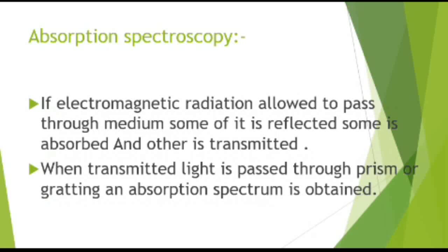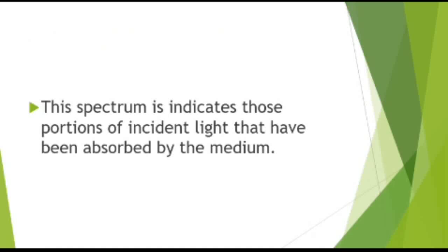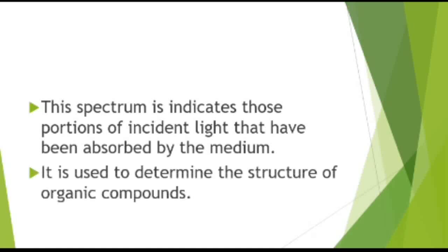In absorption spectroscopy, electromagnetic radiations are allowed to pass through a medium — some is reflected, some is absorbed, and the rest is transmitted. When the transmitted light is passed through a prism or grating, an absorption spectrum is obtained. Absorption spectroscopy is used to determine the structure of organic compounds.